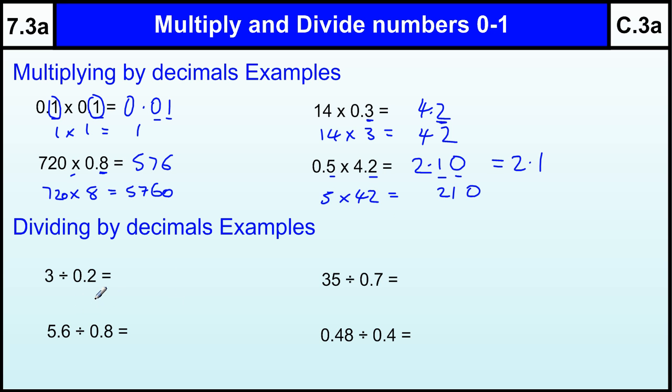Two ways of looking at this. One way to think about, as always try to think about with dividing, is what do I times 0.2 by to make 3, or if you like, 3.0. Now 0.2 times 5 makes 1, so to make 3, I'd have to times by 15.